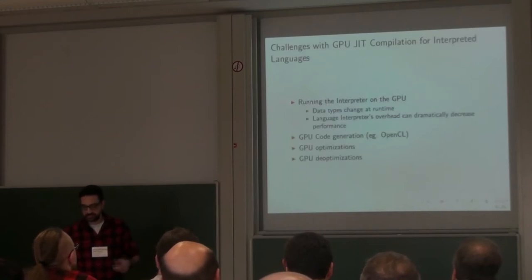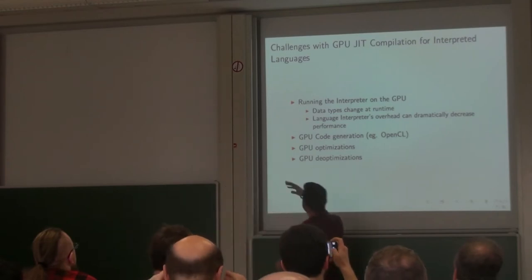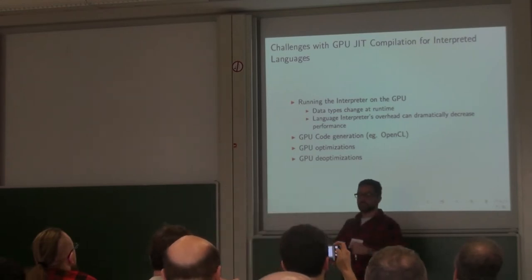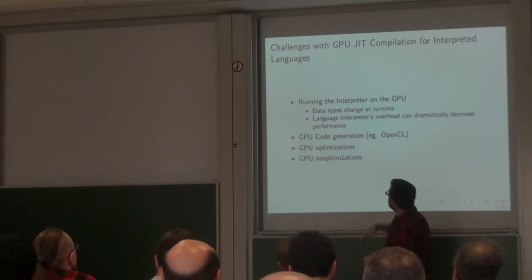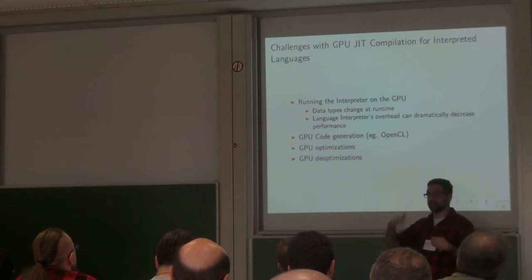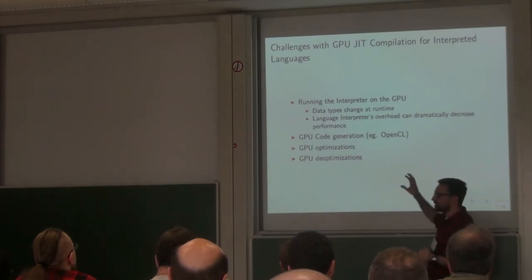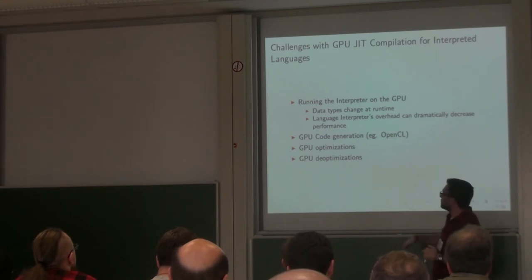It seems clear, but we have many challenges. First of all, we are compiling dynamic languages. Dynamic languages change data types at runtime, so we need to control all the data types we can compile. Also, we are targeting GPUs because we want to speed up the program, but if we have to control all the possible paths that the high-level program has, you introduce an overhead. One key challenge is how to reduce that overhead, and also how to generate code and how to perform optimizations.